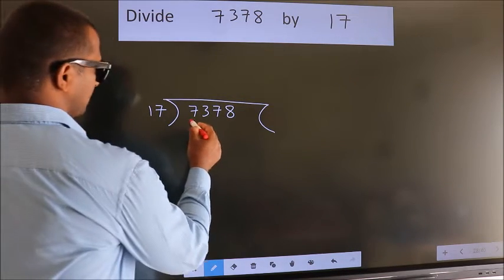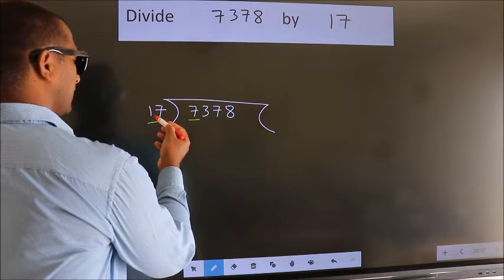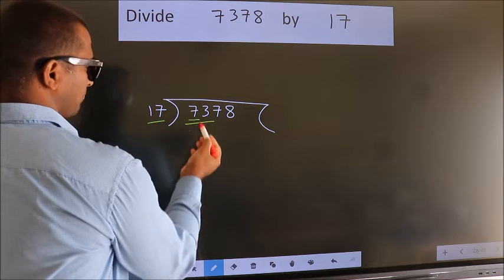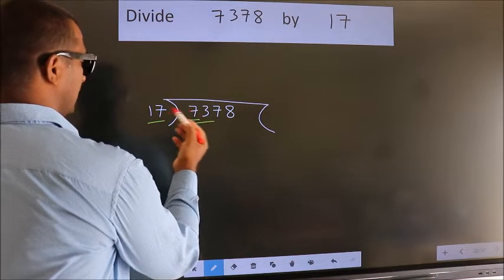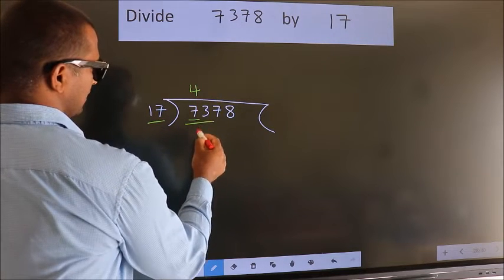Here we have 7. Here 17. 7 is smaller than 17, so we should take two numbers, 73. A number close to 73 in the 17 table is 17 fours, 68.